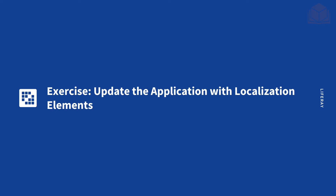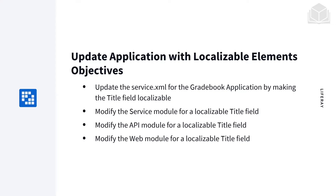In this exercise, we're going to update the application with localization elements. Our objectives are: we will update the service.xml for the gradebook application by making the title field localizable. We'll modify the service module, the API module, and the web module for a localizable title field.